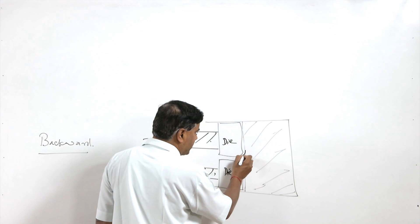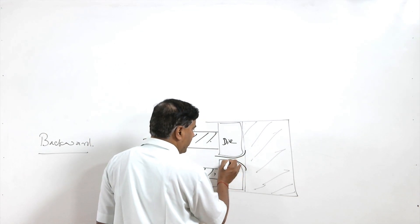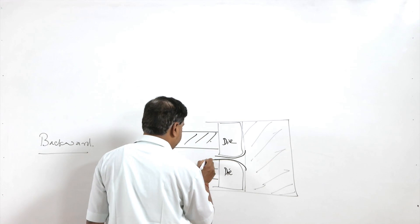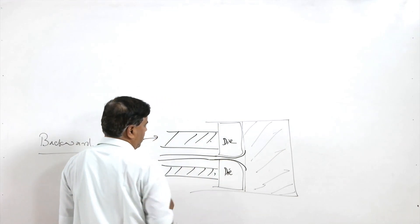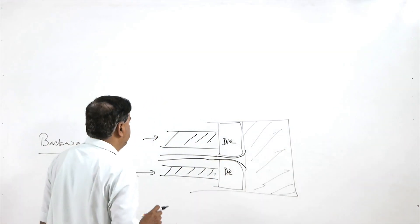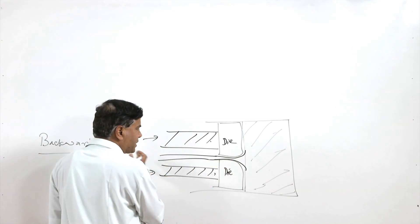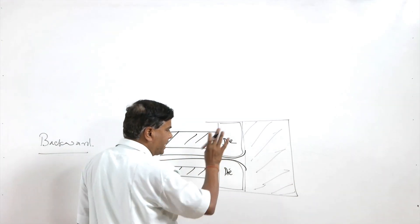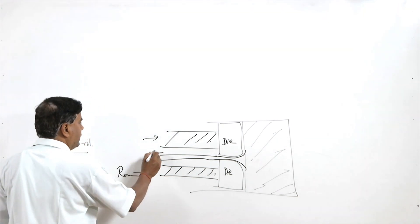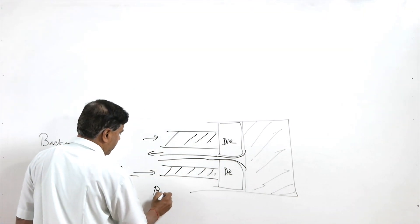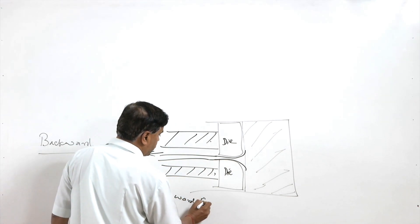In this process the metal starts flowing out of the die and it follows the reverse direction — the flow of the metal through the die is in the direction opposite to the direction of ram movement. That is why it is called backward extrusion.